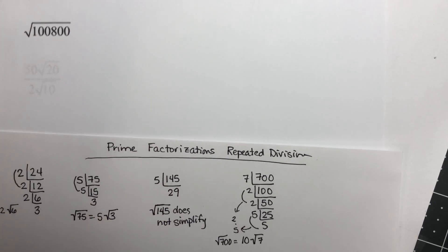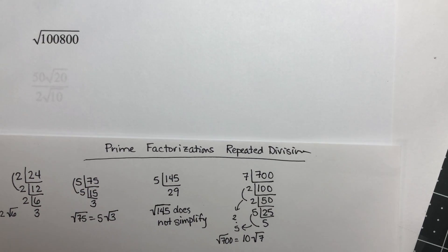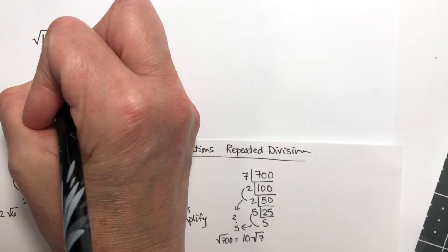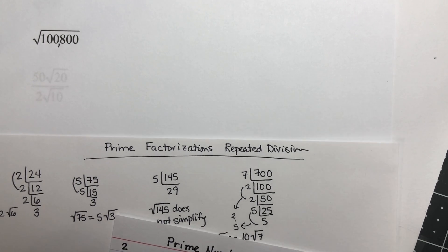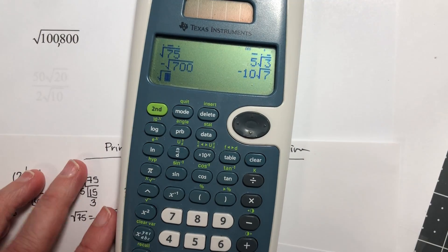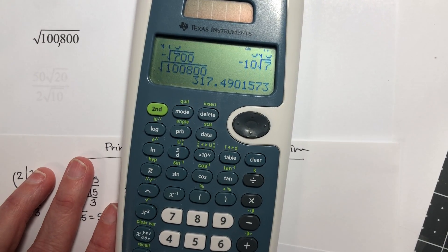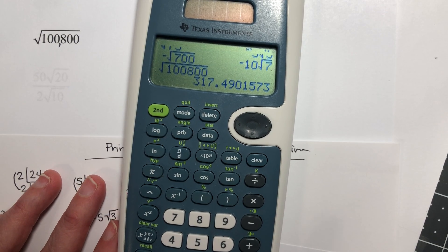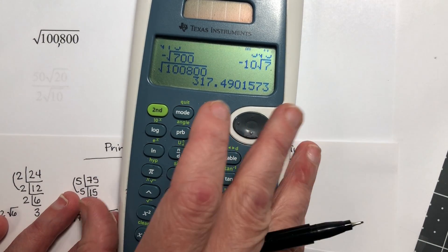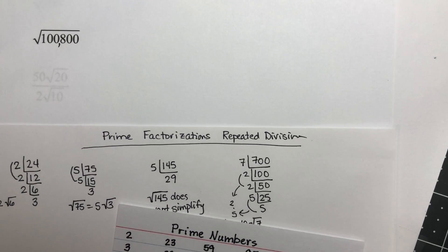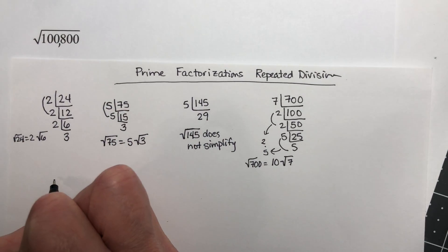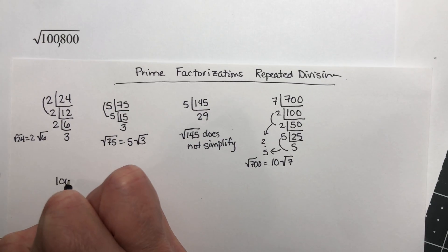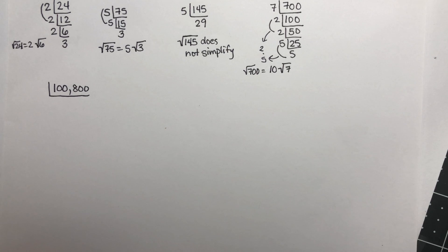Let's look at this one. It's much bigger: the square root of 100,800. Much bigger. And if you try it on the calculator, it goes directly to the decimal approximation. It's too big for your calculator to simplify. So this is what I mean. You're going to have some where they must be done by hand. So I want to do the prime factorization of that.